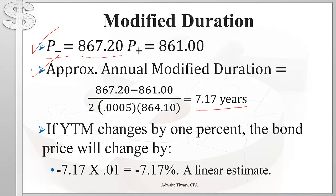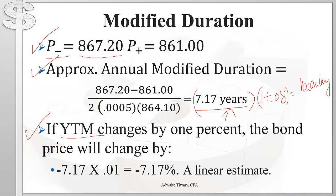We can use this result to compute the approximate annual Macaulay duration by multiplying 7.17 by 1 plus the annual yield to maturity. This result also tells us that if the yield changes by 1%, the bond's price will change by approximately 7.17%.